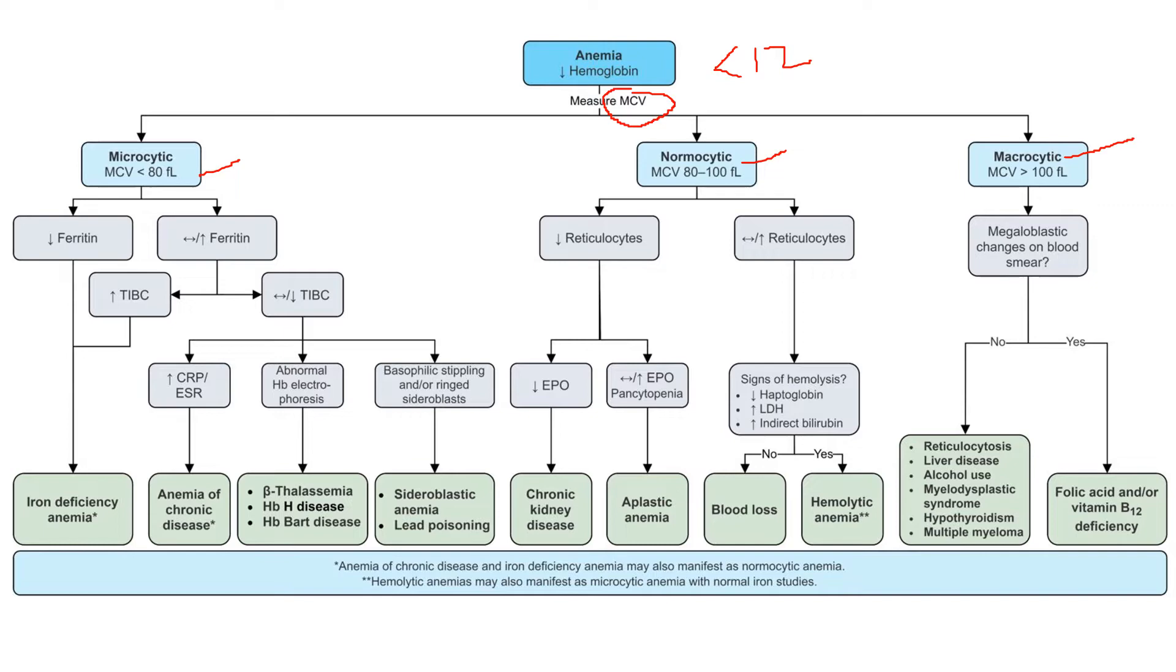When I have a microcytic anemia, I'm looking at iron. Iron is your number one suspect, and in fact it really is your only suspect in this case. So we're going to do a ferritin and a TIBC. That's going to tell us 90% of the information.